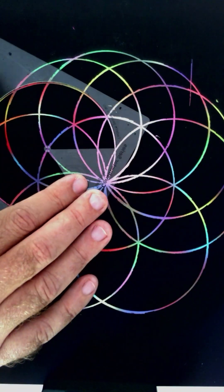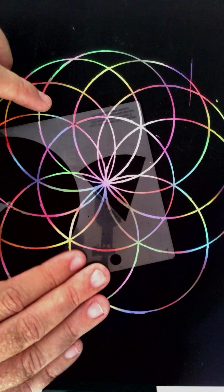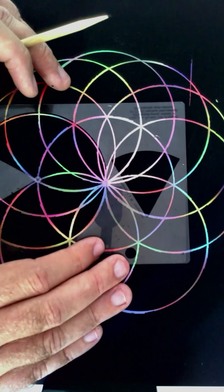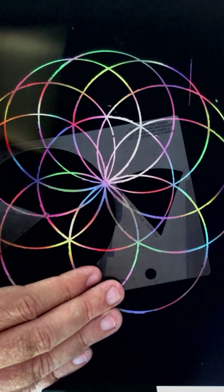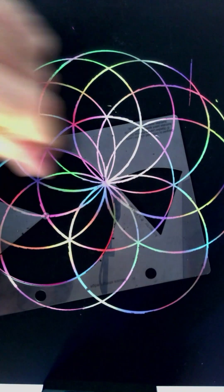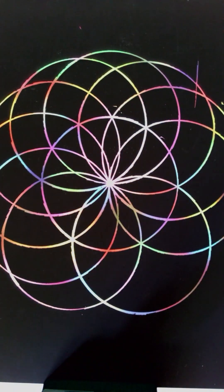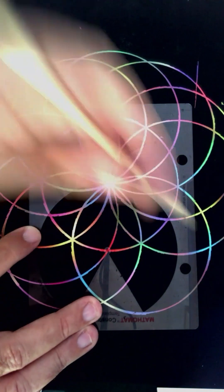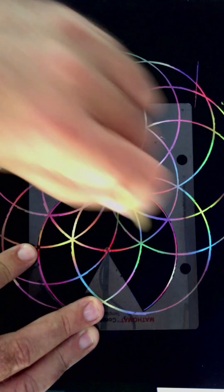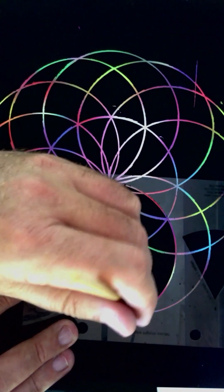Continue slowly, petal by petal, keeping your hand relaxed. If a line isn't perfect, that's okay. Mandalas are about flow, not perfection. When all 12 petals are complete, take a moment to look at the symmetry you've created. You can leave the drawing as it is, or gently trace over the final lines to bring clarity and contrast.